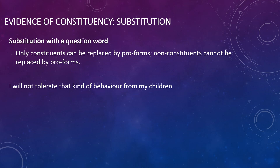Starting with the base sentence 'I will not tolerate that kind of behavior from my children,' we might ask 'What will you not tolerate?' and the answer would be 'that kind of behavior from my children.' What has happened here is we've taken the chunk 'that kind of behavior' and replaced it with a pro-form — namely the question word 'what' — and that should indicate to us that this is a constituent.